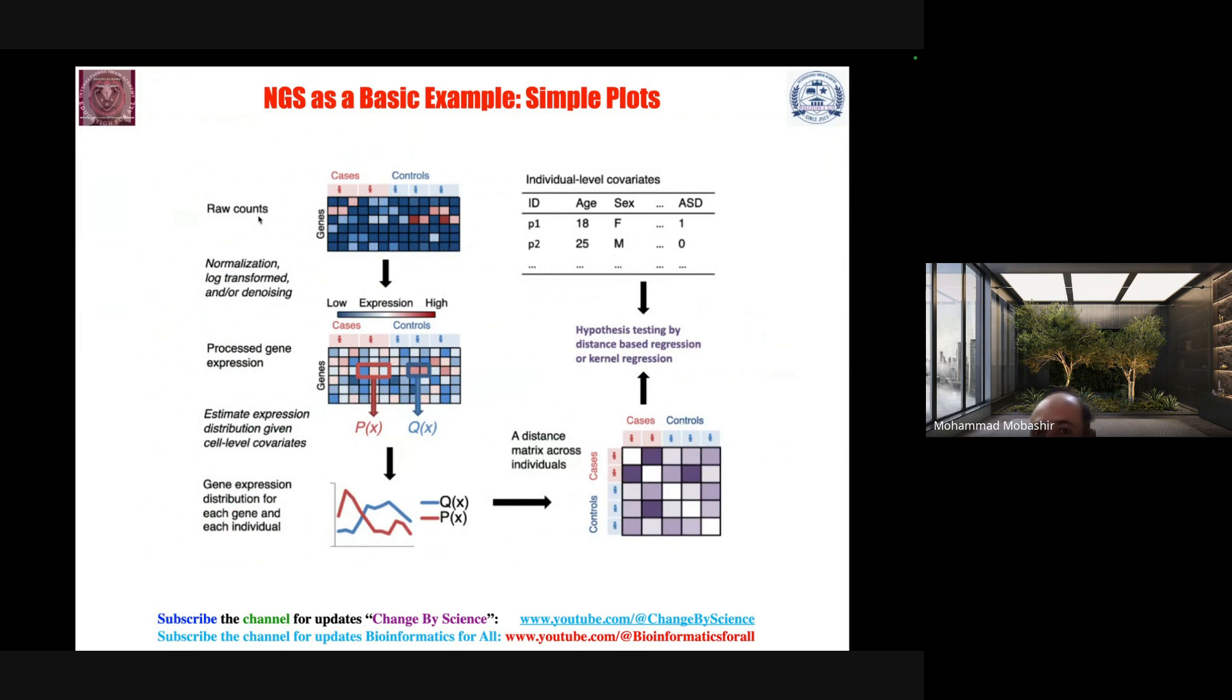This is about raw data, not normalized data. After normalization, you need to think about what type of color you need to choose, even in heat maps or color maps. The processed gene expression shows how it could look, then estimate the expression distribution given cell level covariates.